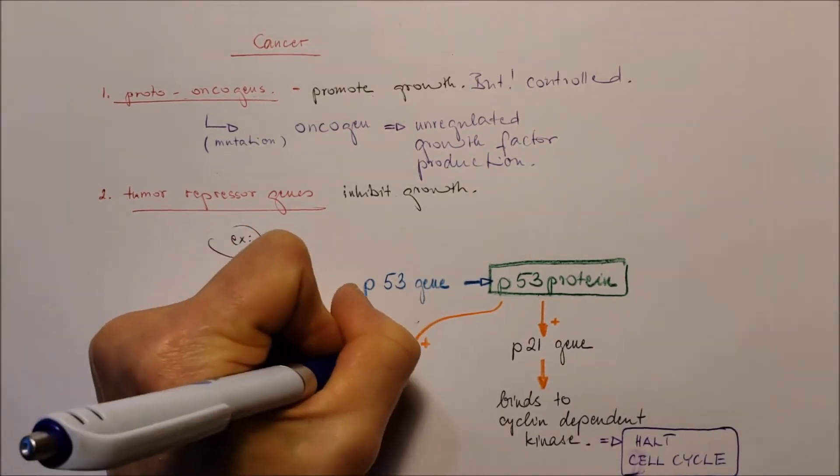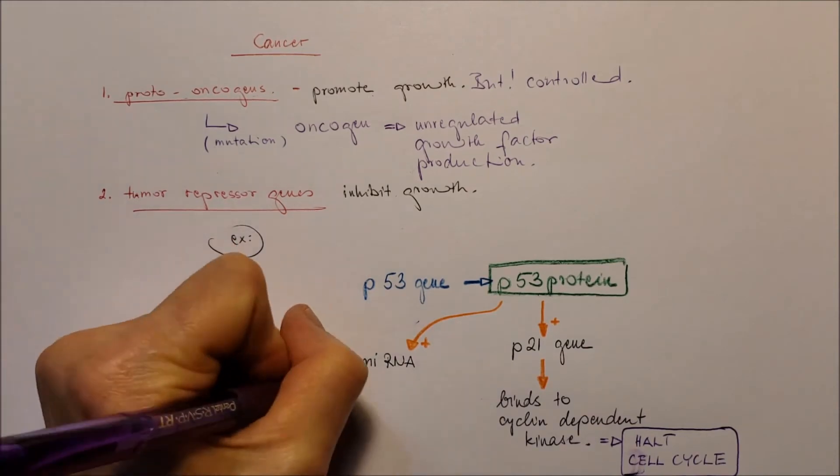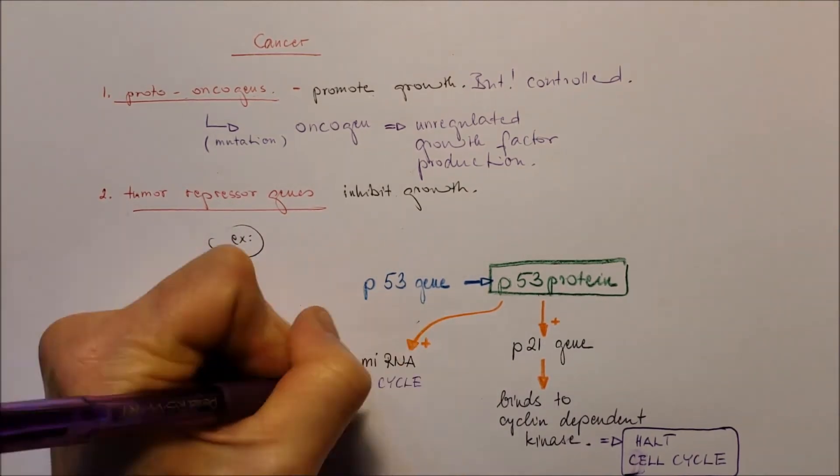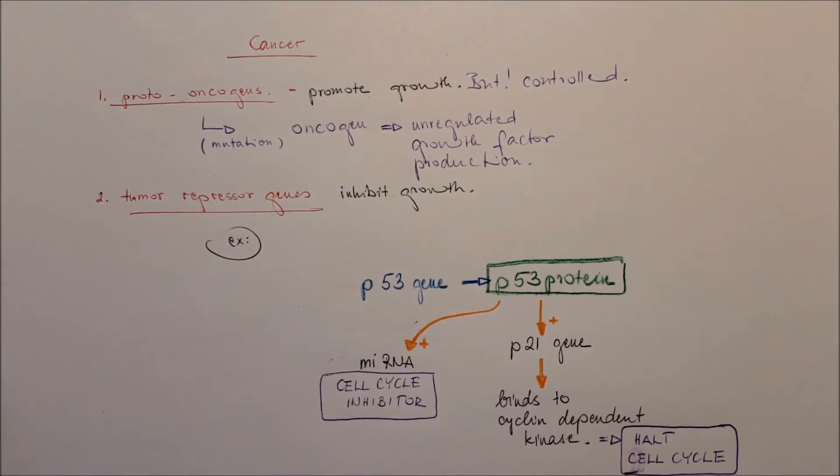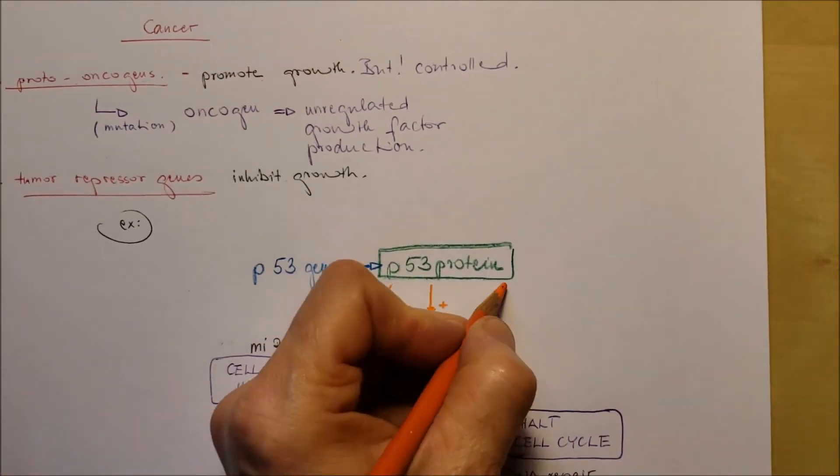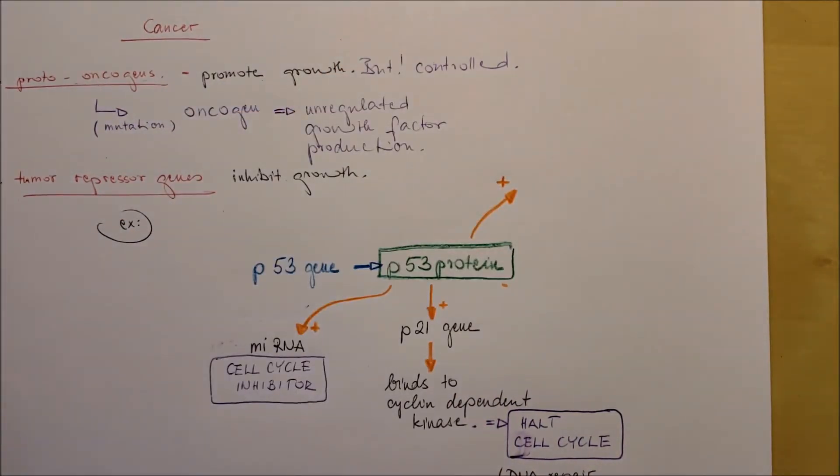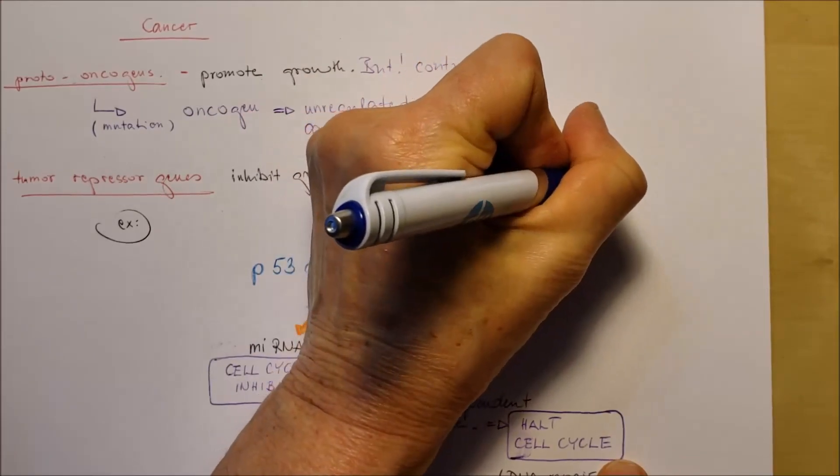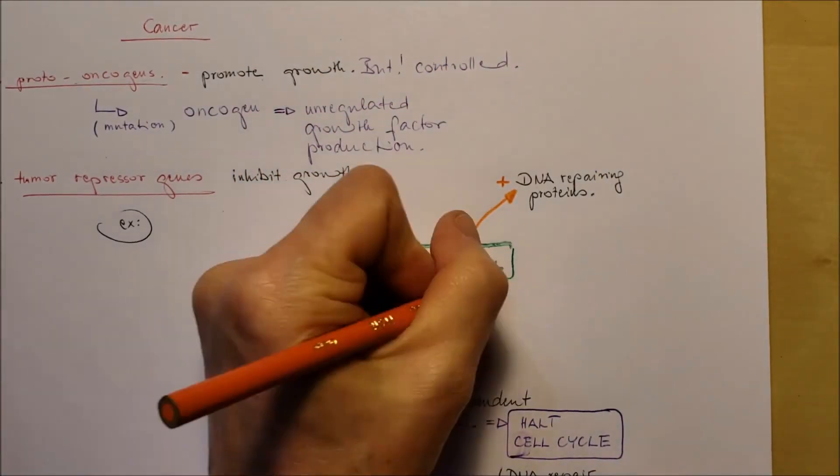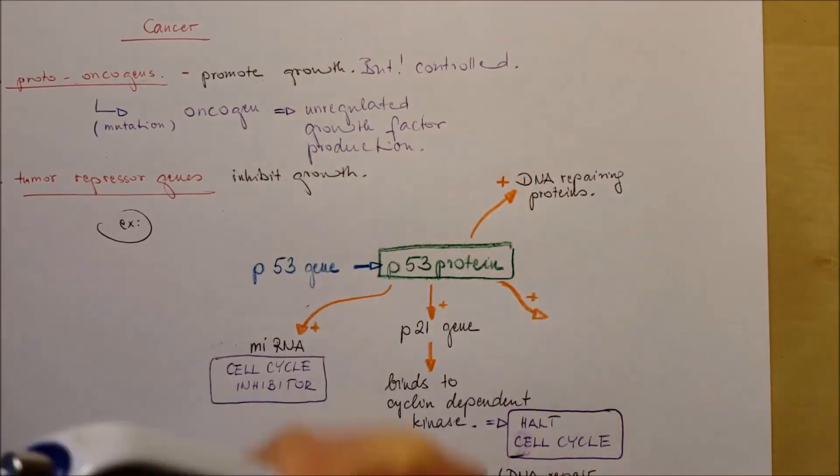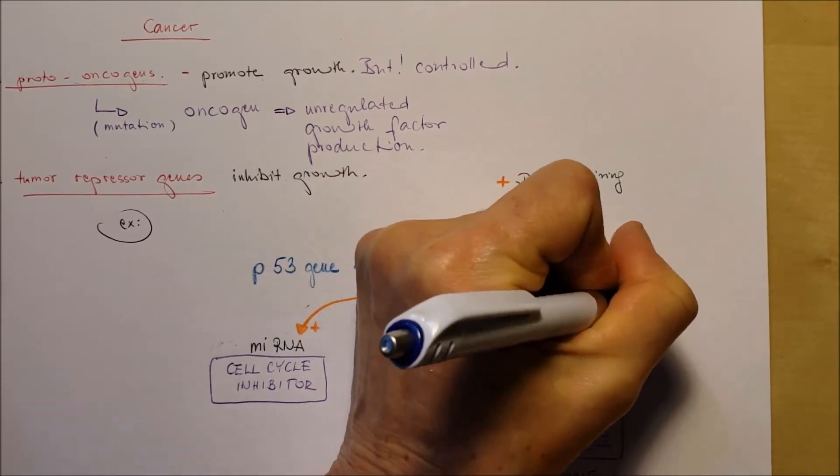Another effect of the p53 protein is that it's going to activate the miRNA. And the miRNA is also a cell cycle inhibitor. Also, it's going to promote production of DNA repair proteins.